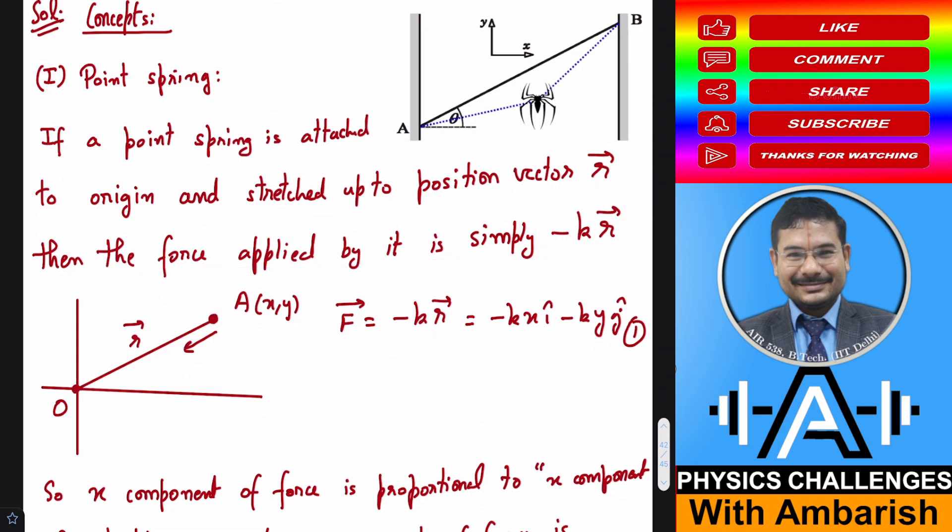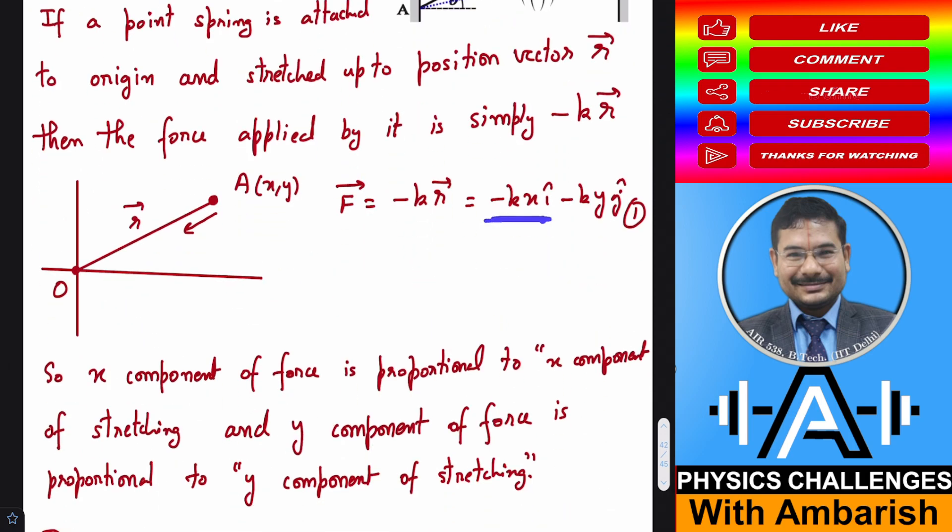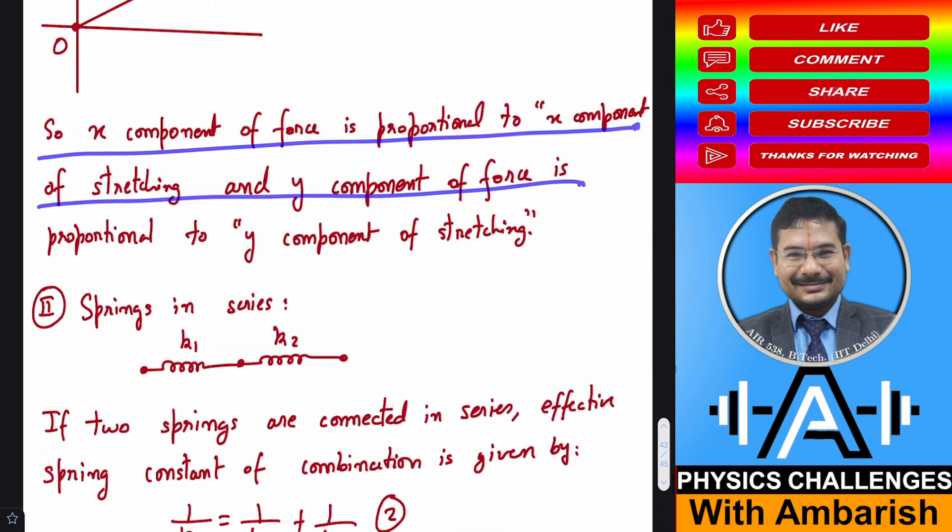This can also be written as minus KX times i cap and minus KY times j cap. If you look at the X component of force, it is just proportional to the stretching in the X direction. The whole string is stretched from here to here, so its X stretching is this and Y stretching is this. X force is proportional to X stretching and Y force is proportional to Y stretching. That's important information we can use directly.